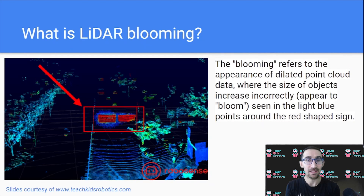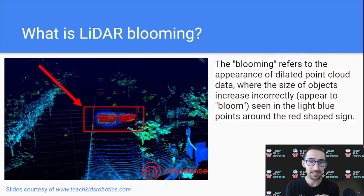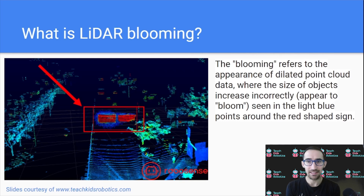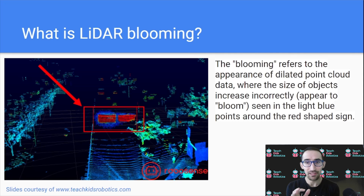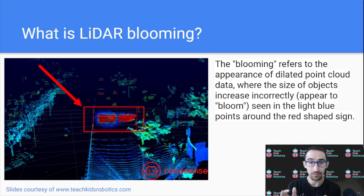In addition to LiDAR ghosts, we also have a concept known as LiDAR blooming. Blooming refers to the appearance of dilated point cloud data where the size of objects increase incorrectly — they appear to bloom. You can see this in the image inside the red box, where around these distinctly red shaped signs we have many blue points, which are the effect of blooming and can change the way we perceive objects returned by our LiDAR.